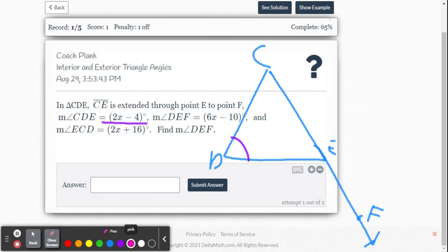They give us measure our angle DEF. DEF is 6x minus 10. Oh, they gave us that exterior angle. DEF is the exterior angle. That's 6x minus 10. And then finally they gave us angle ECD. And that's the 2x plus 16. So again, they gave us the two remote interior angles, the purple and the green angle. And they gave us the exterior angle of the triangle, which is the pink angle there.